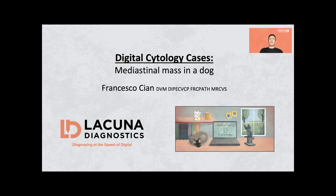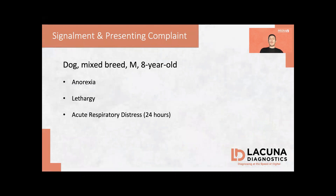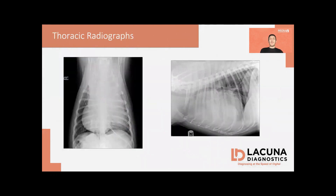This was a dog, mixed breed, male, 8 years old, that was referred to the veterinarian for a few days' history of anorexia, lethargy and depression. In the last 24 hours, the dog also developed acute respiratory distress. As part of the diagnostic process, the veterinarian performed X-rays and identified the presence of a large mediastinal mass, as you can appreciate from these ventrodorsal and lateral projections.